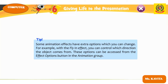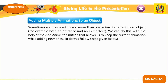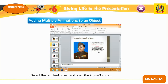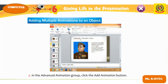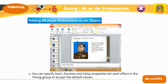Adding multiple animations to an object: sometimes we may want to add more than one animation effect to an object — for example, both entrance and exit effects. We can do this using the Add Animation button, which keeps the current animation while adding new ones. Select the required object, open the Animation tab, click Add Animation in the Advanced Animation group, and select the desired effect. You can specify start, duration, and delay, or accept default values.